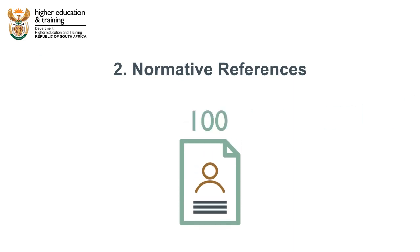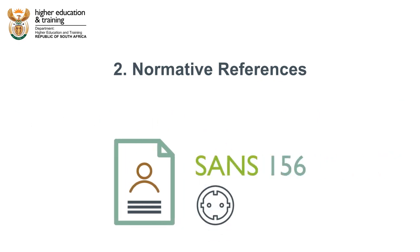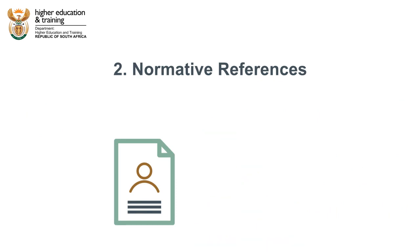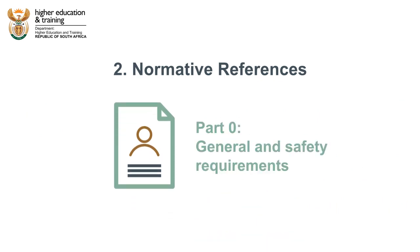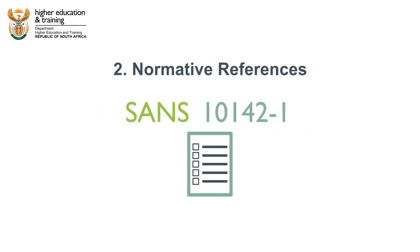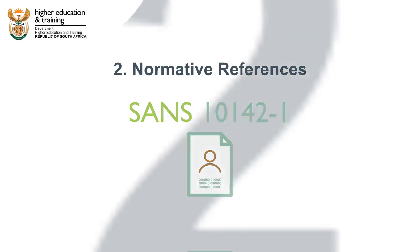There are over 100 references to other SANS codes listed, including SANS 156, Plug and Socket Outlet Systems for Household and Similar Purposes in South Africa, Part 0, General and Safety Requirements. This means that not everything we need to consider is contained within the SANS 10142-1 document.